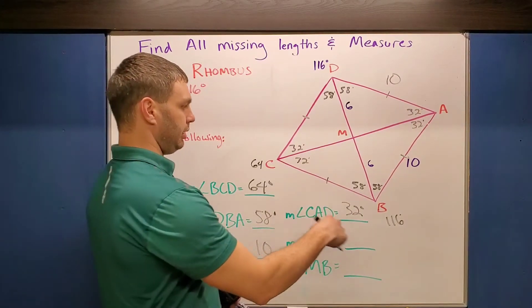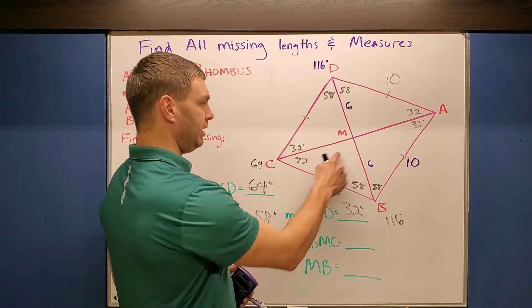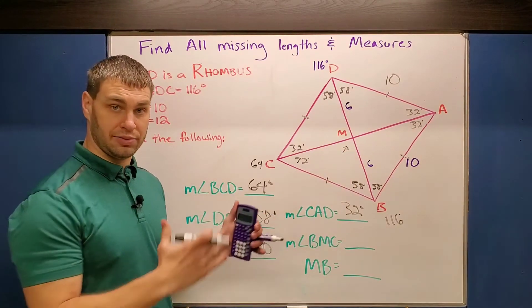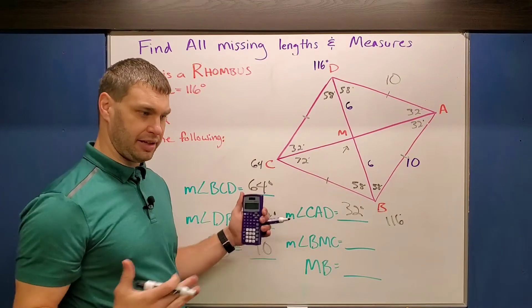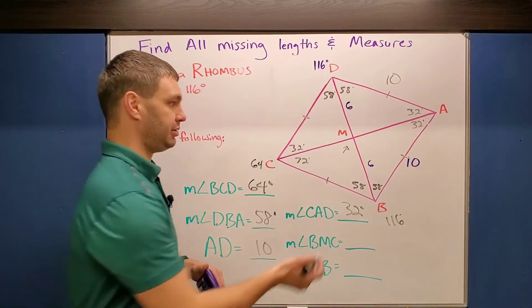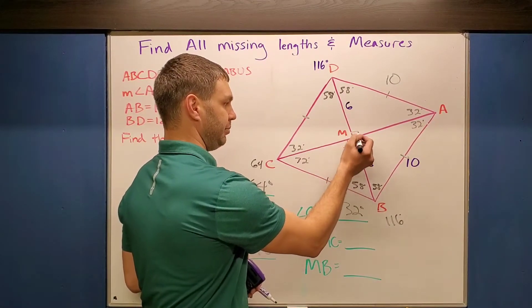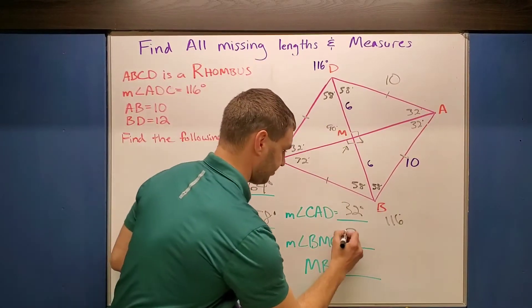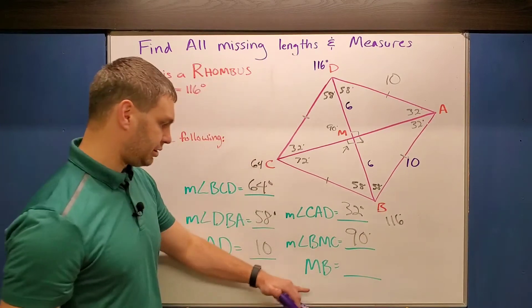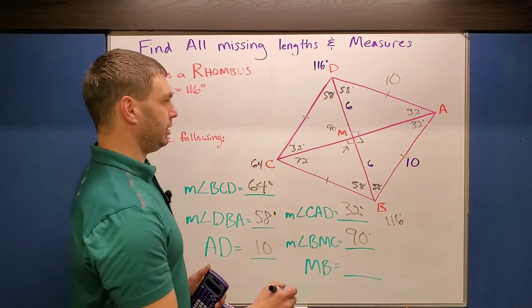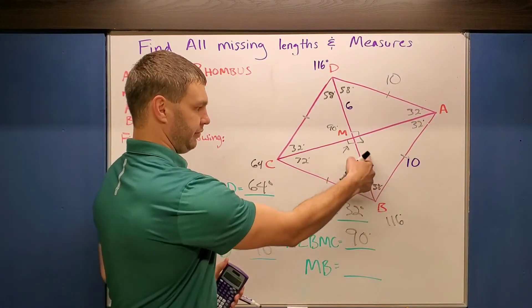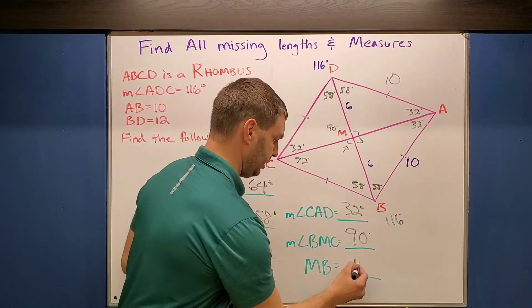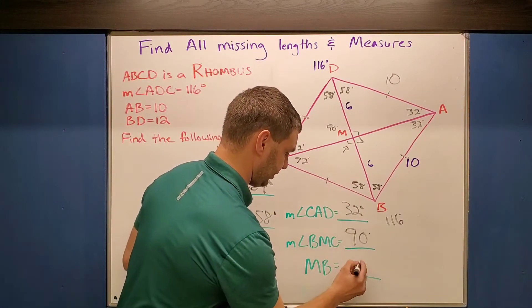Next is BMC — one of my middle angles. A rhombus has a special property that says the diagonals cut through perpendicularly, so these are all 90 degrees in the middle. You can put boxes to show that. And then lastly, MB: we already found that was 6 when we took the 12 and split it. So MB is 6.